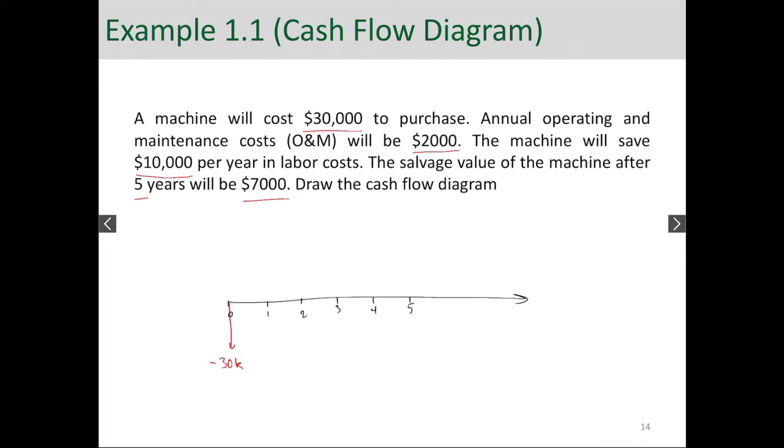Then annual operating and maintenance costs will be $2,000 each year. So $2,000 cash flows over five years. The machine will save $10,000 per year. So that's a savings. So that's a positive cash flow. So we have $10,000 here. Again over 10 years. So $10,000.